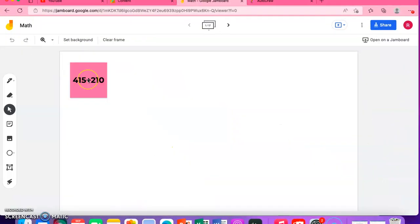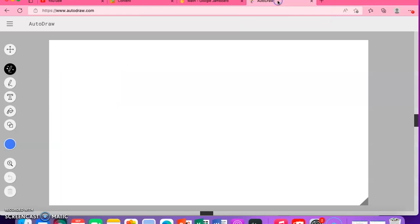Here's the Jamboard. You have many problems: 15 plus 210, 215 plus 310, and a bunch of math problems, one for each of the students. You would just choose the problem, whichever one you want. Then go to the other link, which is the auto draw website, and you would show your work here.